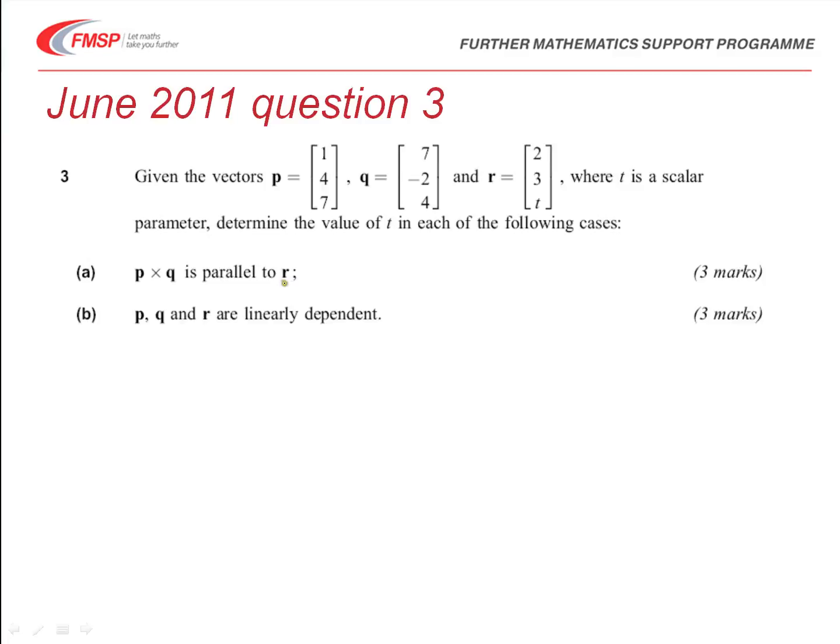If that's the case, that means that P cross Q can be expressed as a multiple of R, since it's in the same direction as R, and from that we should be able to determine the value of T.